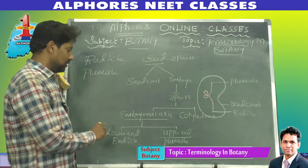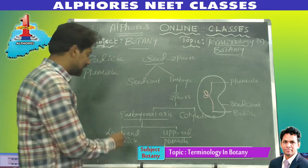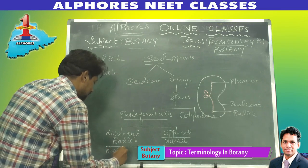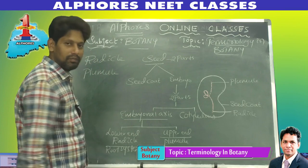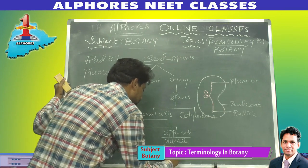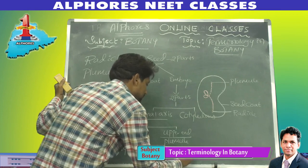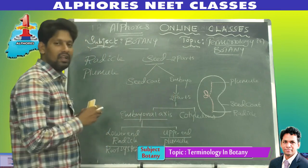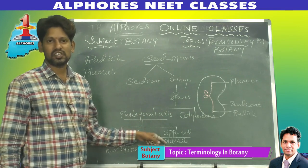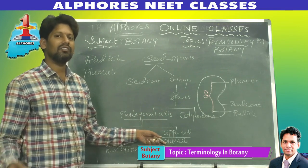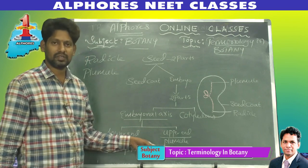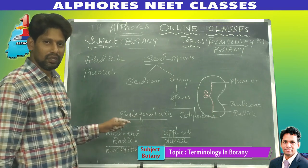Radicle develops into the root system. Plumule develops into the shoot system. The shoot system means stem plus leaves along with branches.